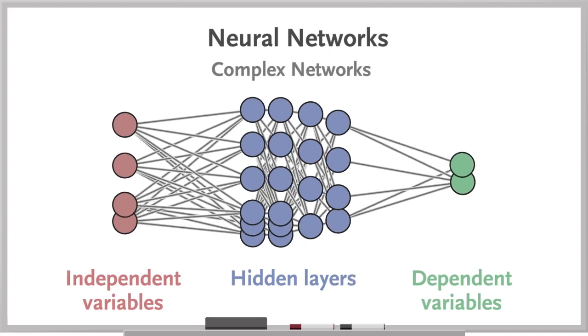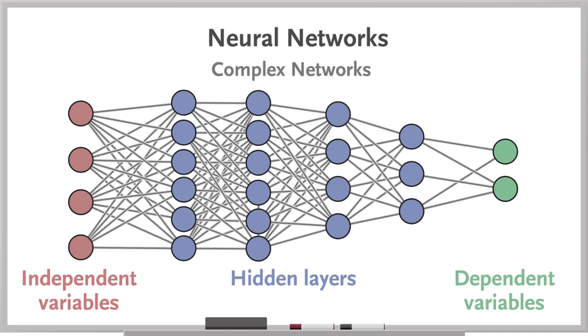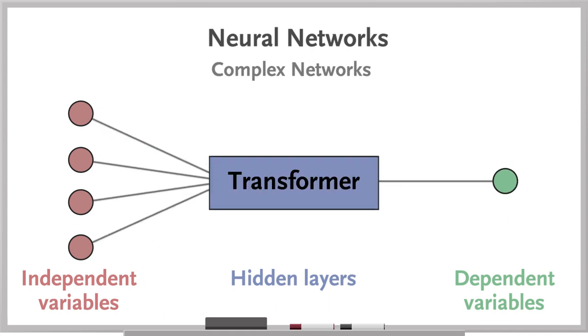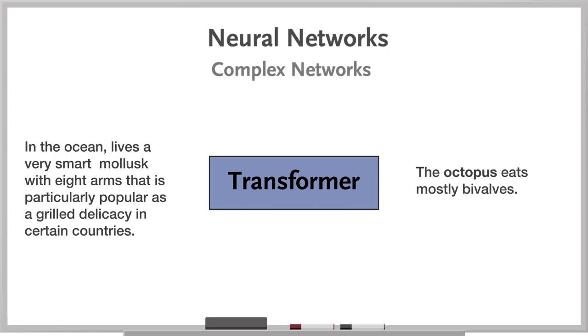More complex neural networks can have many hidden layers. Large language models rely on a sophisticated form of neural network known as a transformer model. Transformer models are particularly good at addressing the fact that the probability of a given word occurring may be dependent on words that are very far away in the sentence or even in a previous sentence.